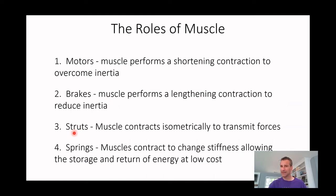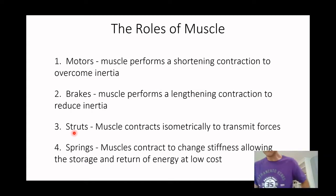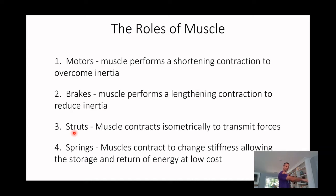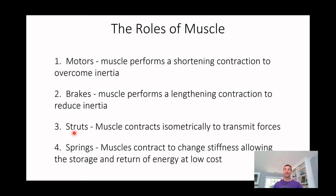We've talked about muscles as motors and brakes. The third role is using it as a strut — we use our muscles isometrically to transmit force, working much more like a tendon, and what they're doing is changing the joint that moves. For example: if I'm completely loose and someone puts pressure on my elbow, I bend at my elbow. But if I do an isometric contraction of my tricep and do the same thing, now I'm moving at the shoulder. That isometric contraction changes the joint that moves — that's how we use our muscles as struts.